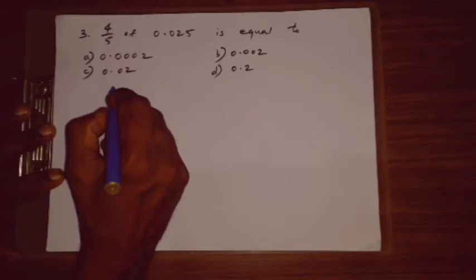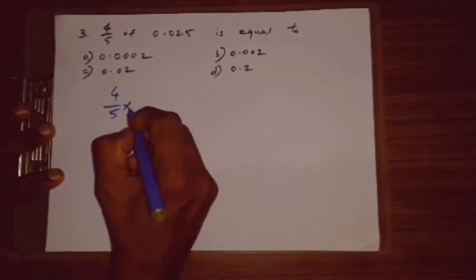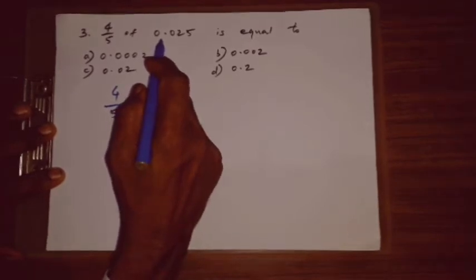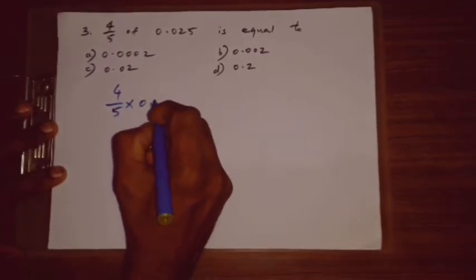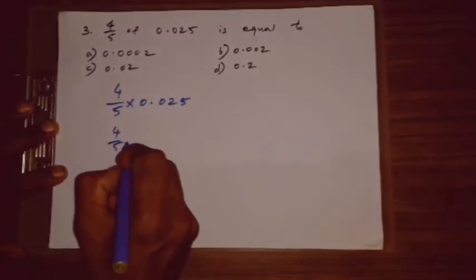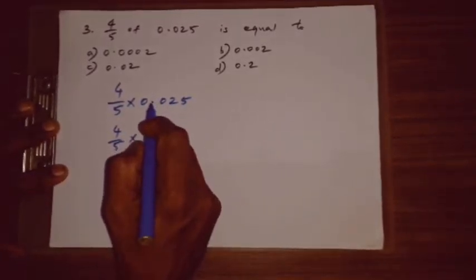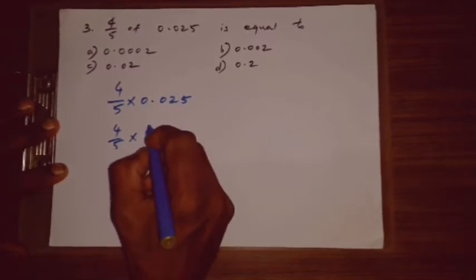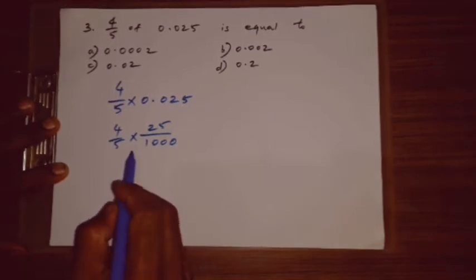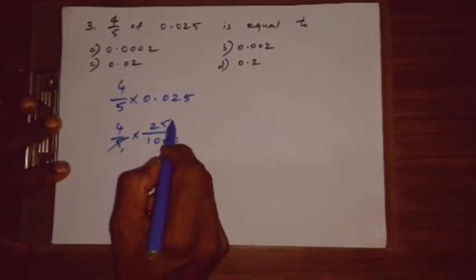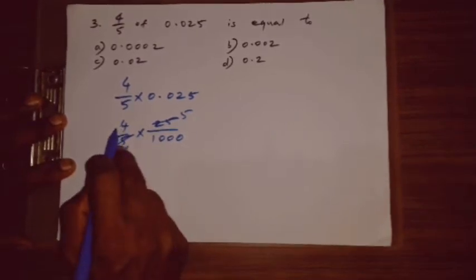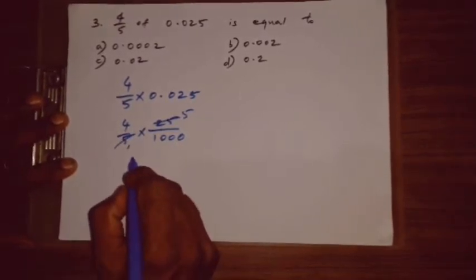So, 4 by 5 multiply, this also, change it to 25 by 1,000. So, 1, 5's are 5. 5, 5's are 25. So, 4, 5's are 20.